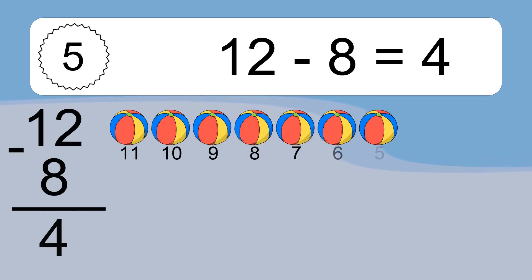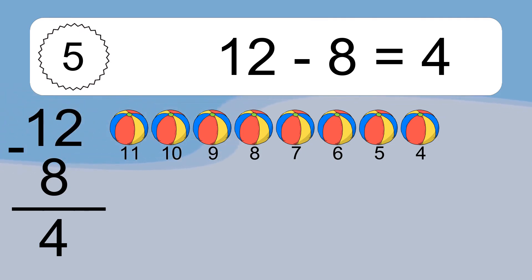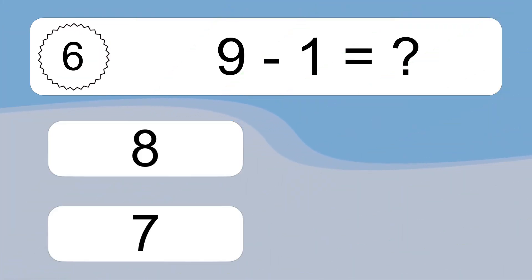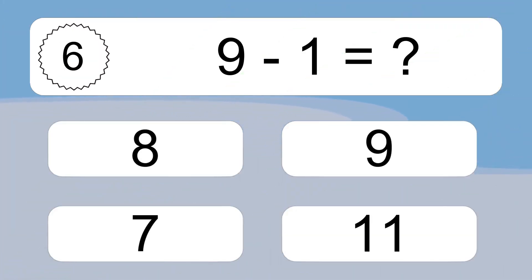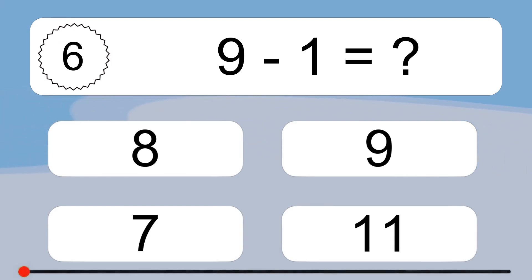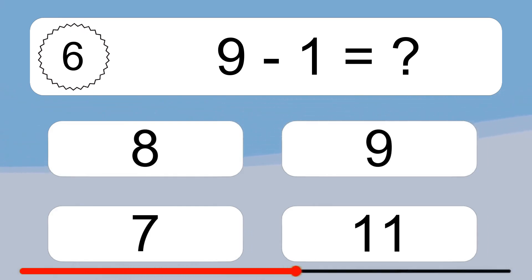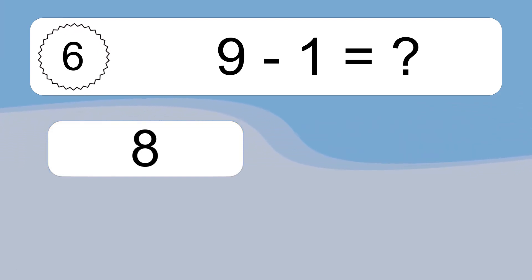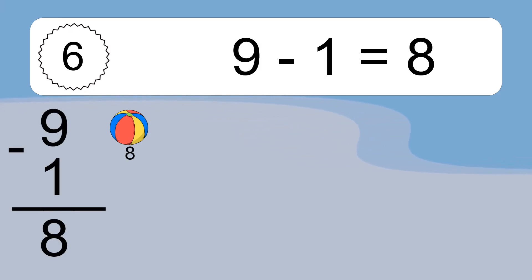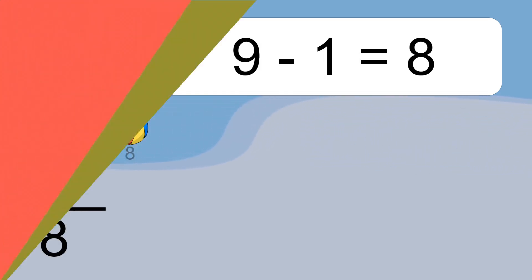12 minus 8 equals what? 12 minus 8 equals 4. Let's count it: 11, 10, 9, 8, 7, 6, 5, 4. 9 minus 1 equals what? 9 minus 1 equals 8. Let's count it: 8.